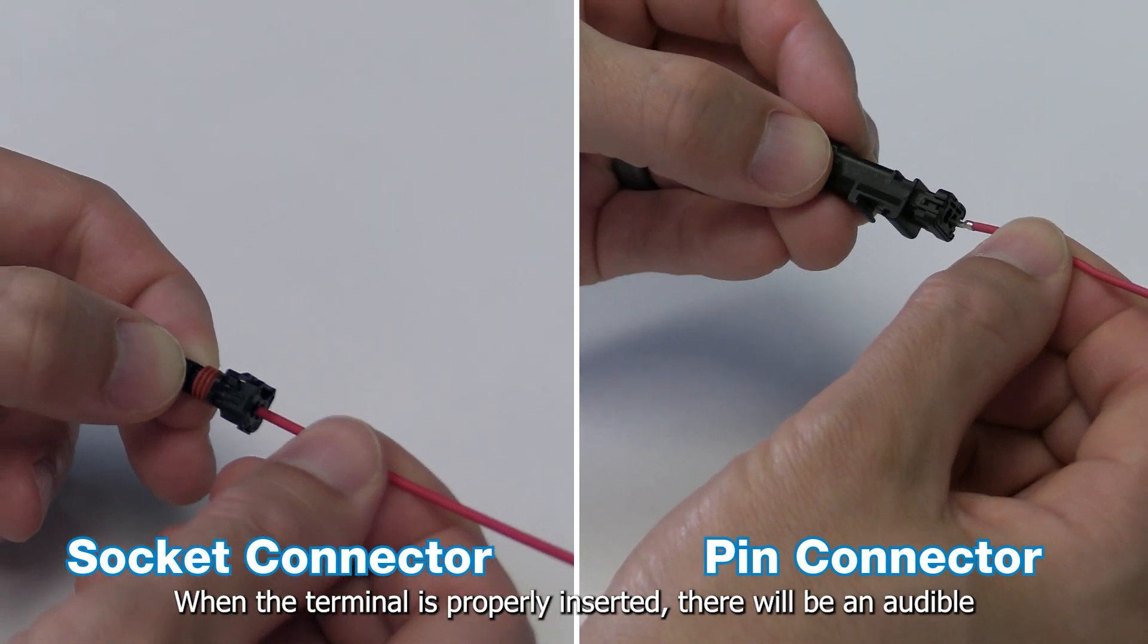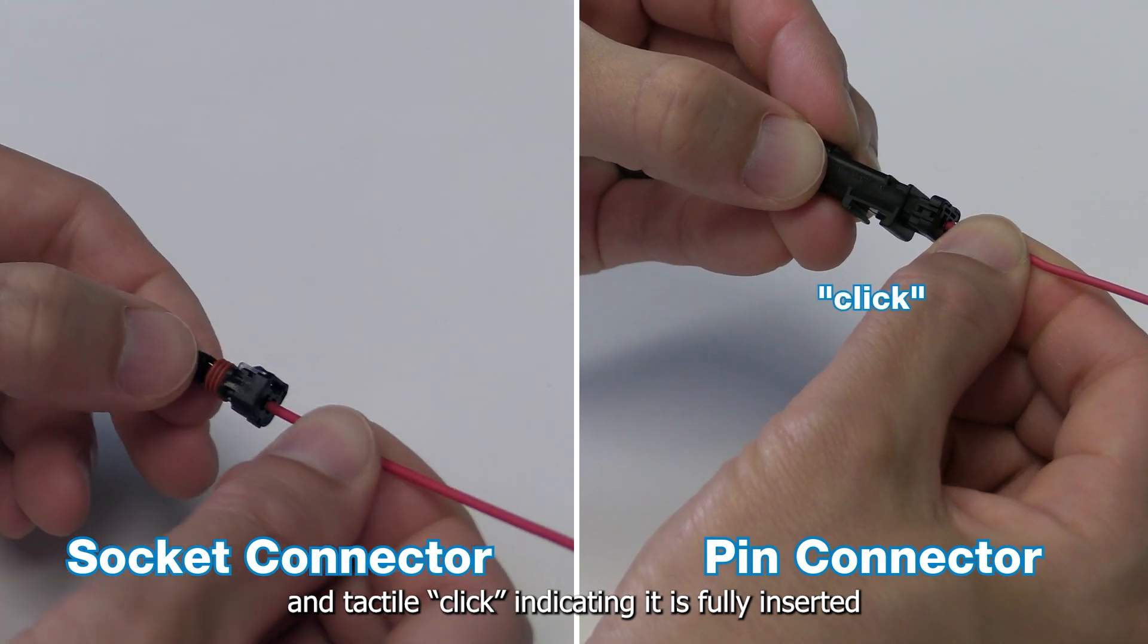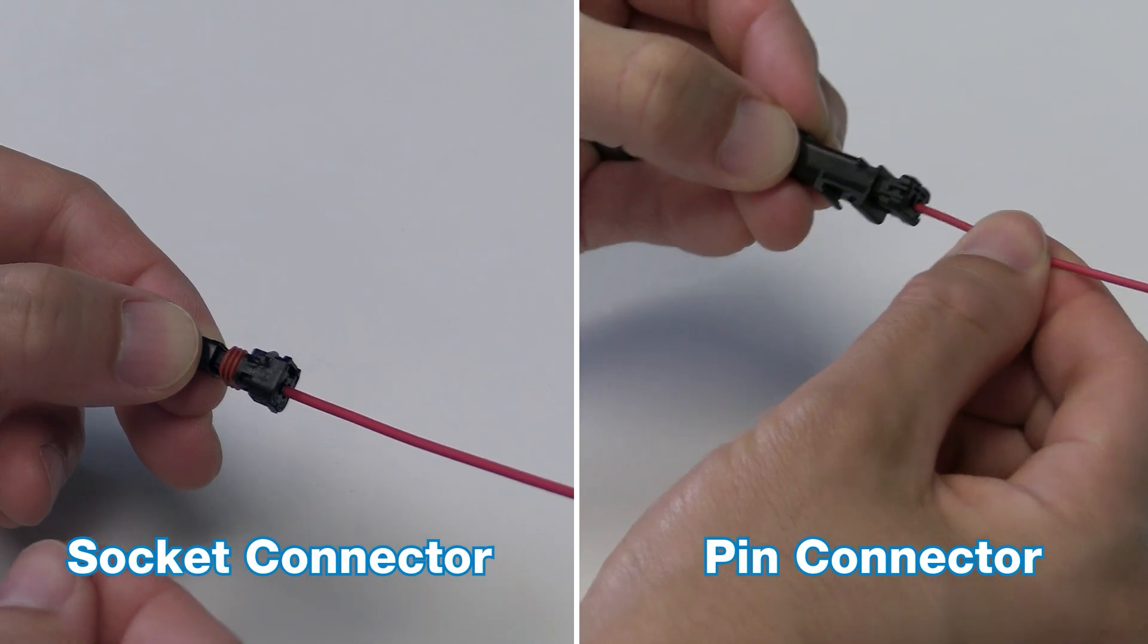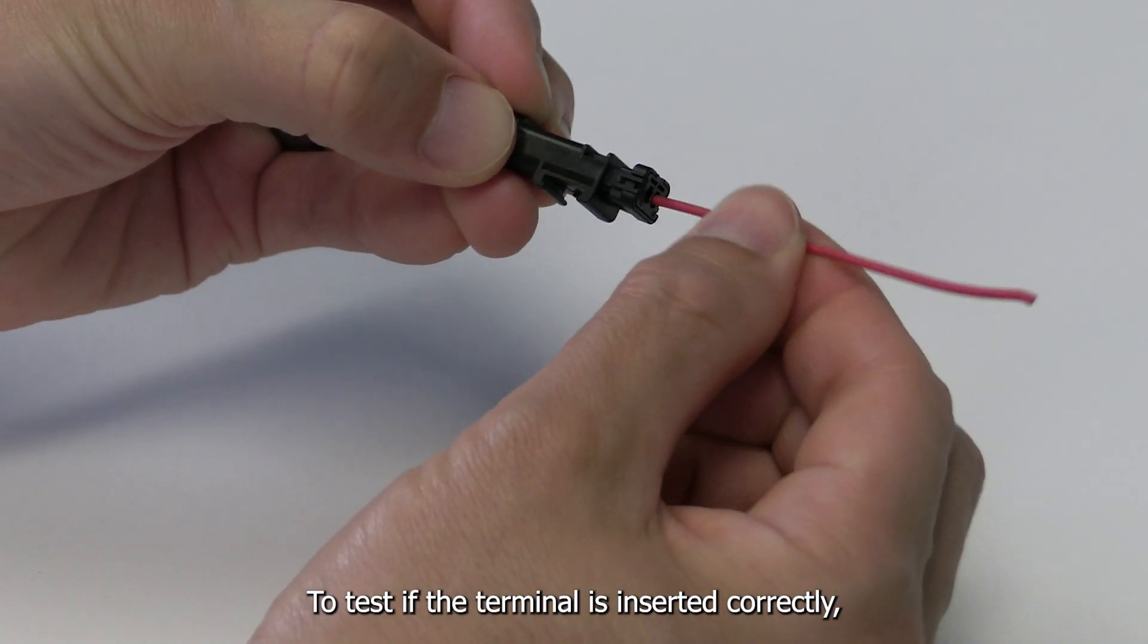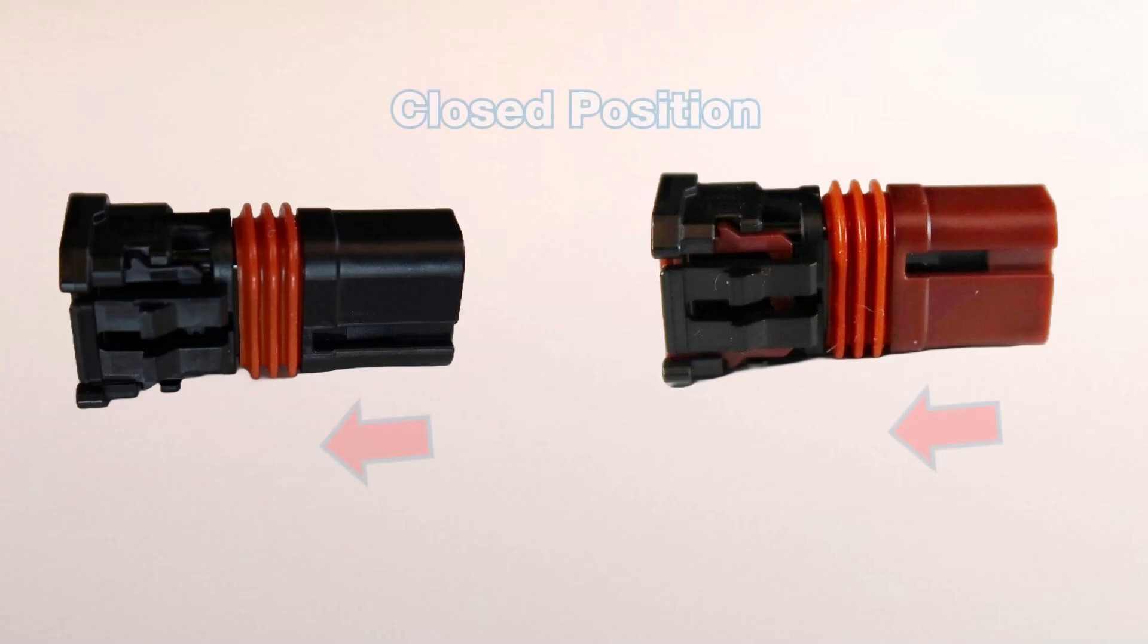When the terminal is properly inserted, there will be an audible and tactile click indicating it is fully inserted and the first terminal retention latch is engaged. To test if the terminal is inserted correctly, gently pull on the wire with no greater than 20 newtons of force.